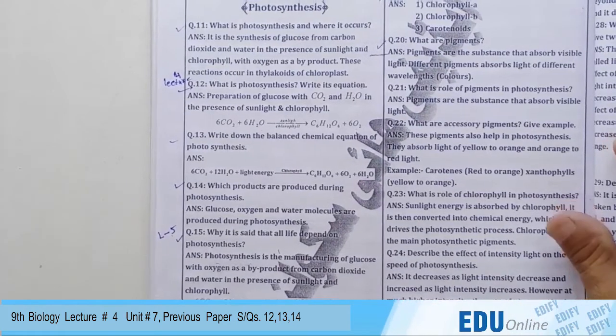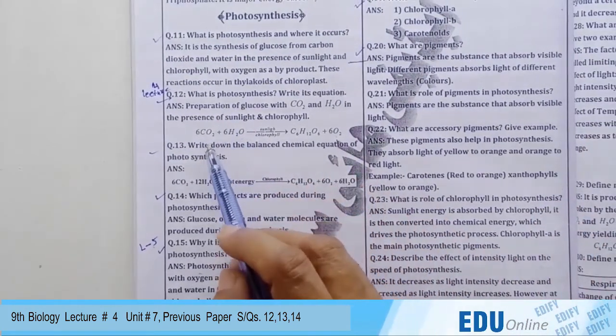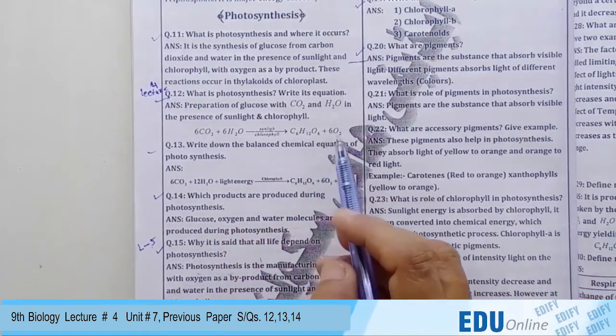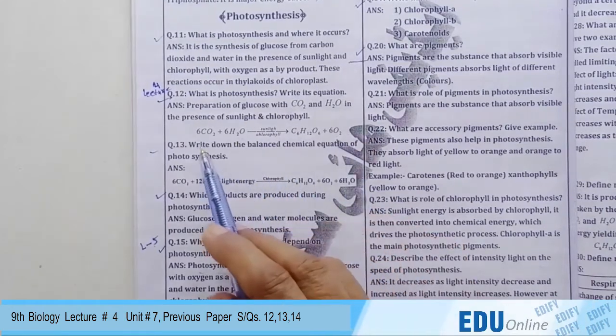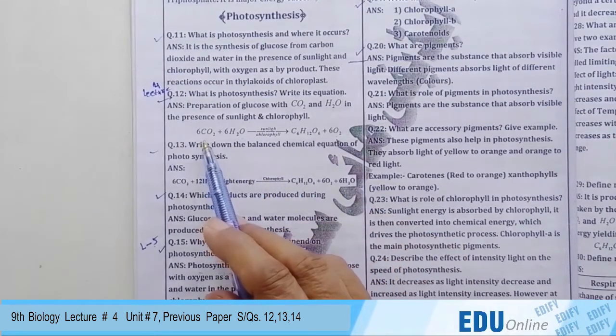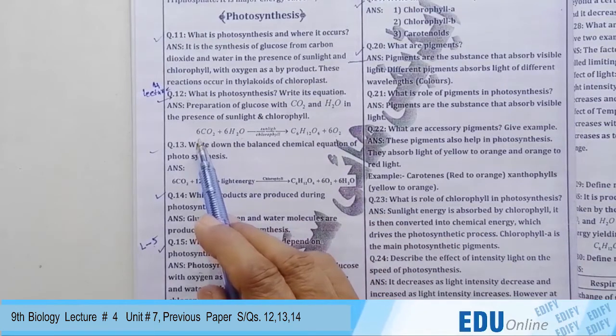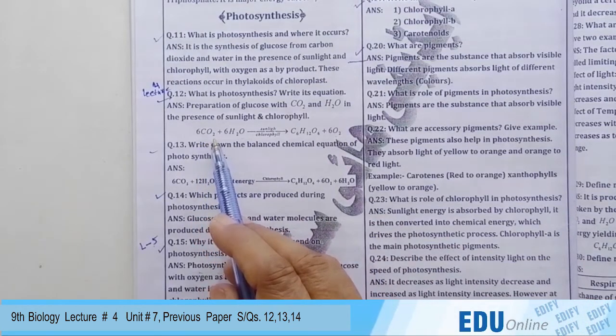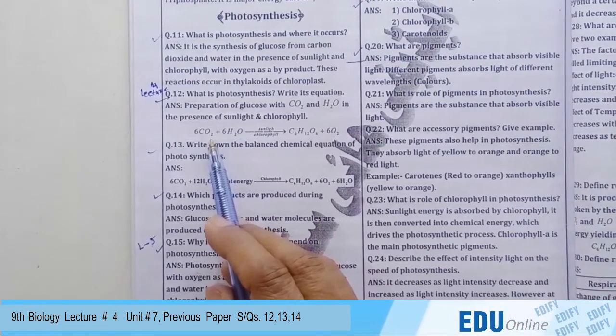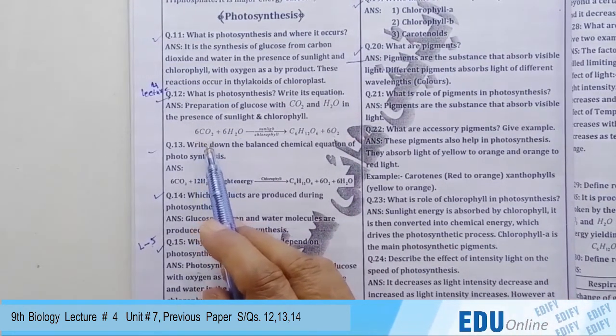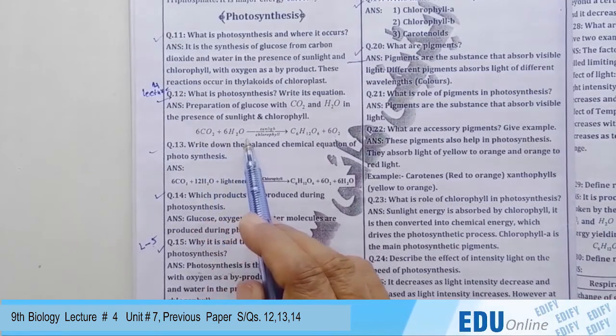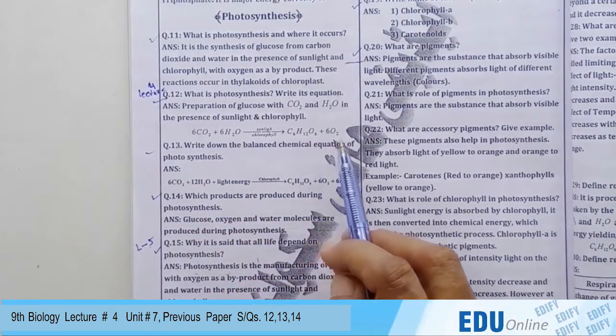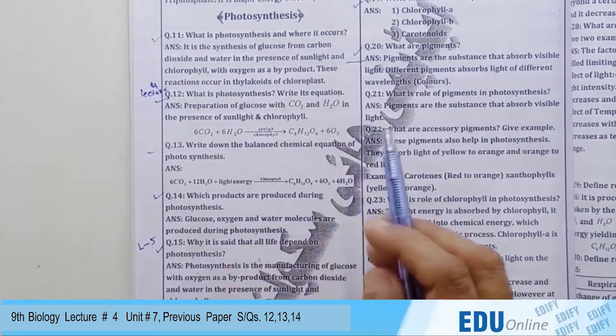You can see here carbon dioxide plus water forms glucose plus oxygen. Six is used to balance this equation because we need six carbon and oxygen. To balance, we have six carbon dioxide plus six water, which forms glucose plus six oxygen.